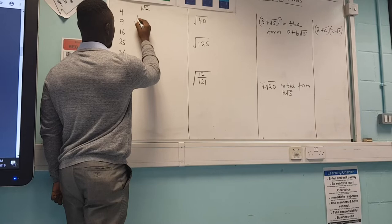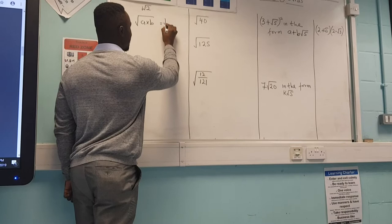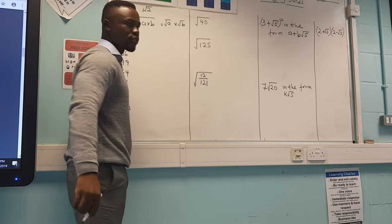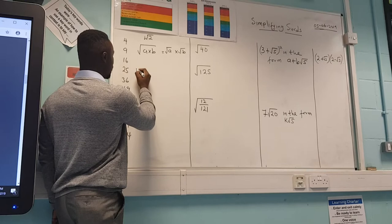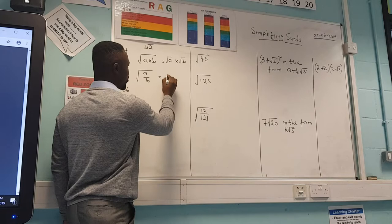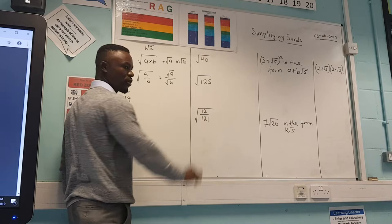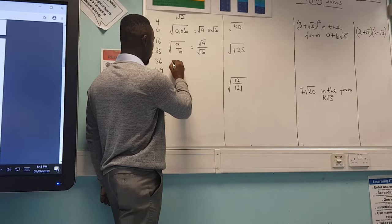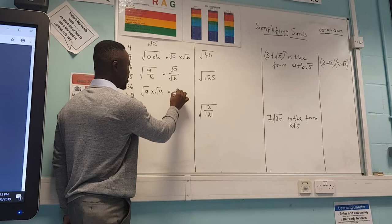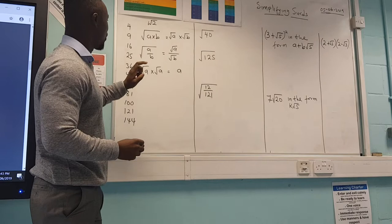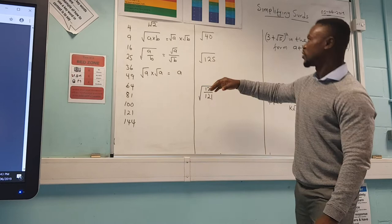The first rule is: the square root of (a × b) can be written as square root of a times square root of b — you can split the numbers that way. Similarly, the square root of (a/b) can be written as square root of a over square root of b. Also, the square root of a times the square root of a just gives you a. Remember these three rules, as we'll use them throughout.